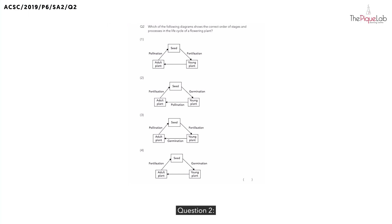Question number two. Which of the following diagrams shows the correct order of stages and processes in the life cycle of a flowering plant? Remember, a life cycle is a series of repeated events, and there's actually no start point or end point.